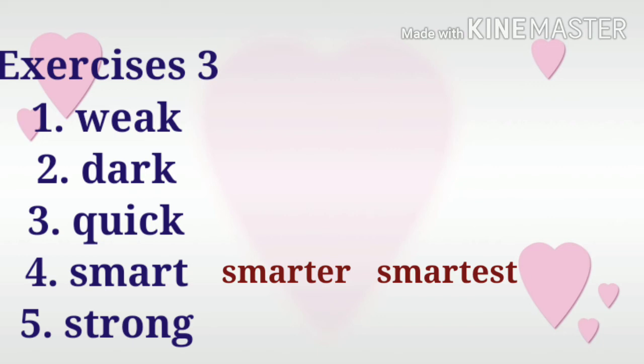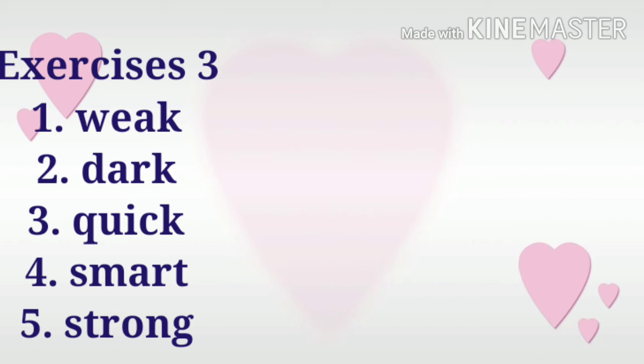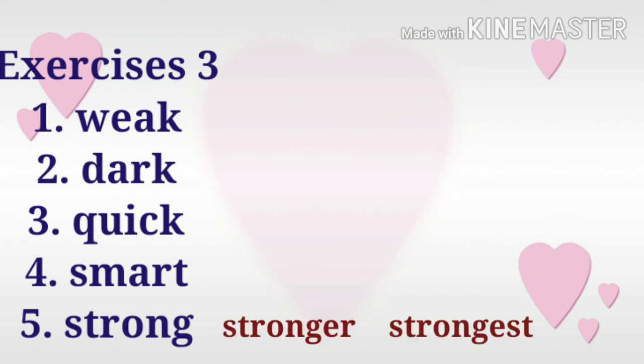Let's now move to number five. The word is strong. Let us make it in the comparative degree and in the superlative degree of comparison. In the comparative degree, it becomes stronger — we add ER at the end of the word strong. And in the superlative degree, it becomes strongest — you add EST at the end of the word strong. So: strong, stronger, strongest.